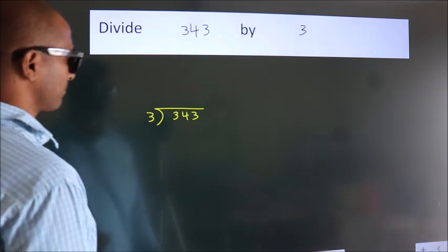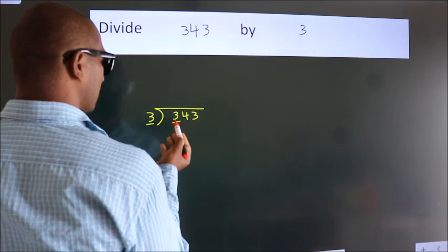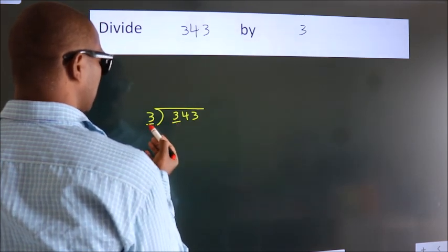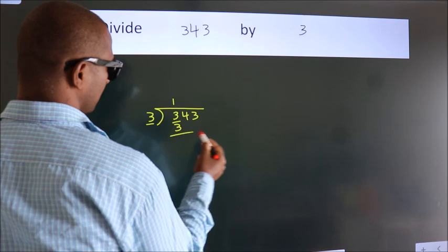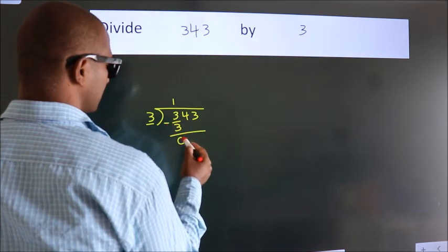Next, here we have 3. Here 3. When do we get 3? In the 3 table. 3 ones are 3. Now we should subtract. We get 0.